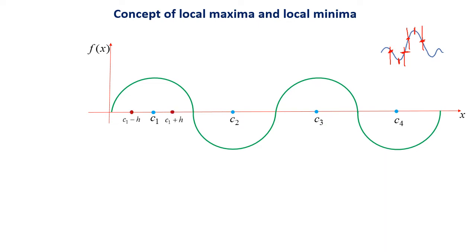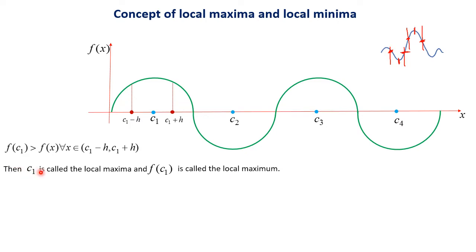There is a critical point where the value of the function changes — the graph increases, then at that point starts decreasing. I am considering a small value h (greater than or equal to 0) and taking points c1 minus h and c1 plus h very close to c1. When we consider x in (c1 − h, c1 + h), the value of the function is maximum at c1. So f(c1) > f(x) for every x in (c1 − h, c1 + h). Then c1 is called the local maxima and f(c1) is called the local maximum.